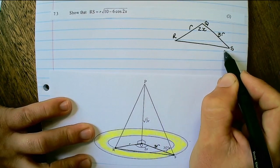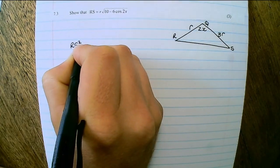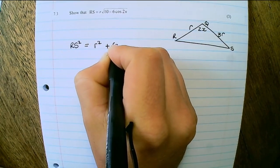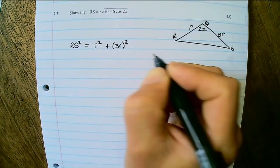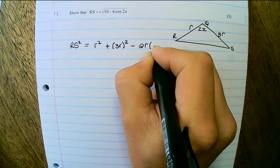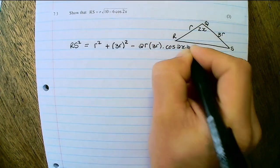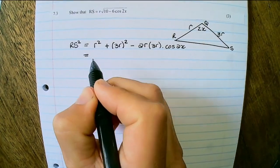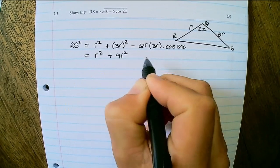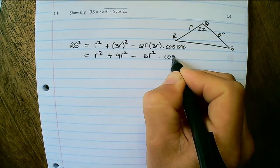Now in order to find RS, we can use the cosine rule. So RS squared would be equal to R squared plus 3R squared, minus 2R times 3R times the cos of 2X. And if I multiply out, I have R squared plus 9R squared minus 6R squared times cos 2X.